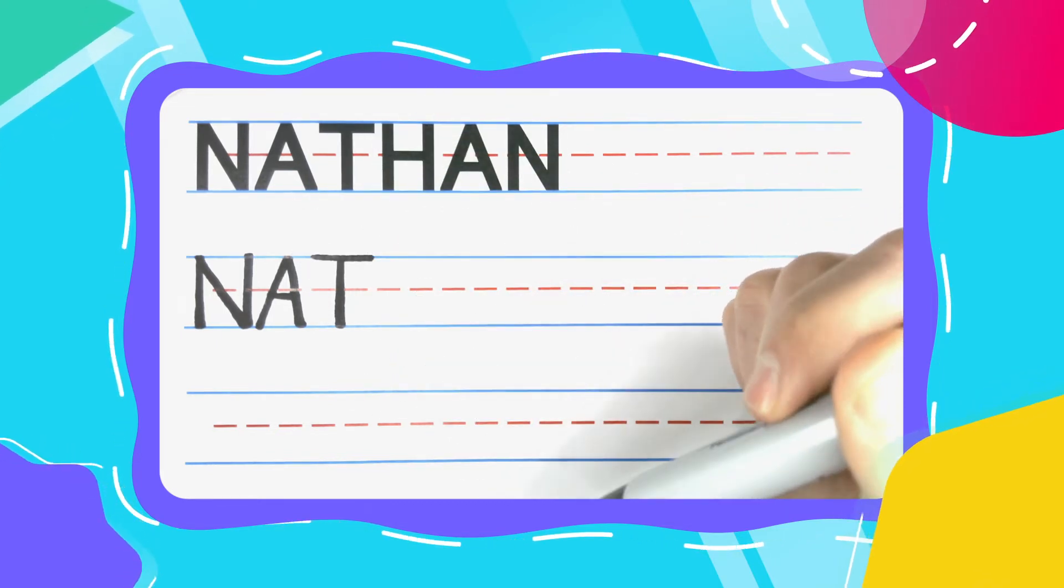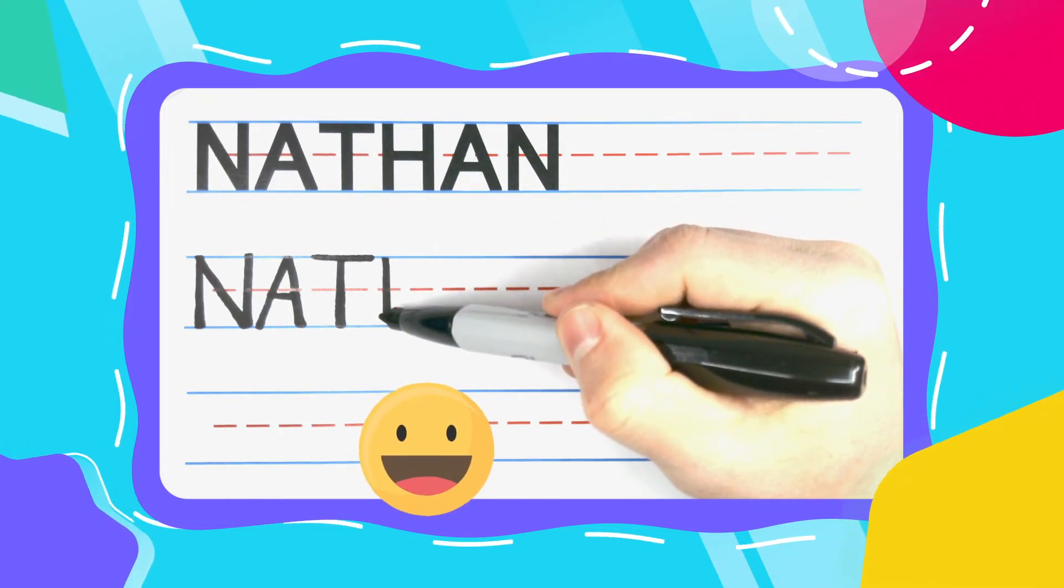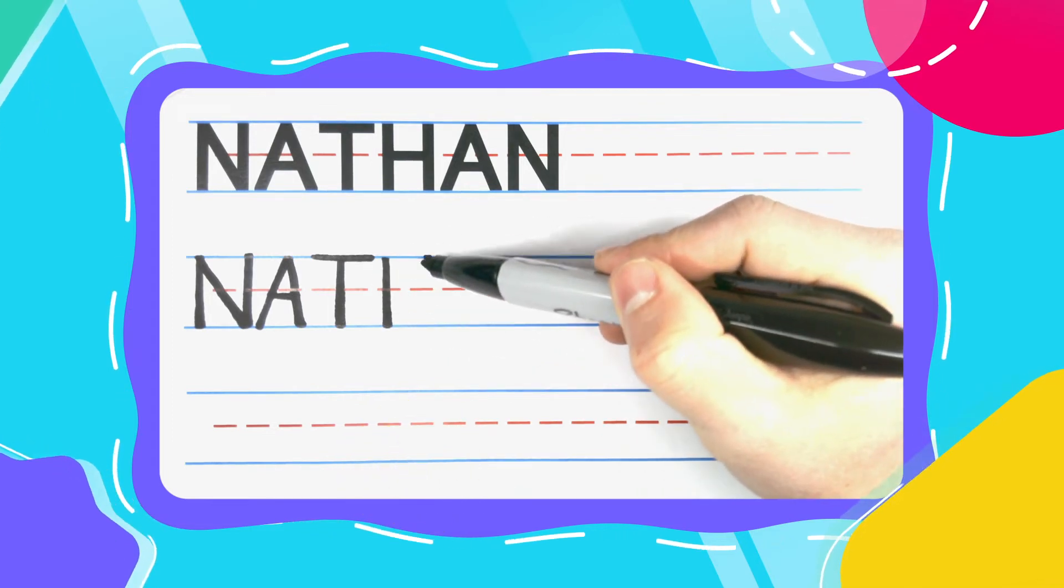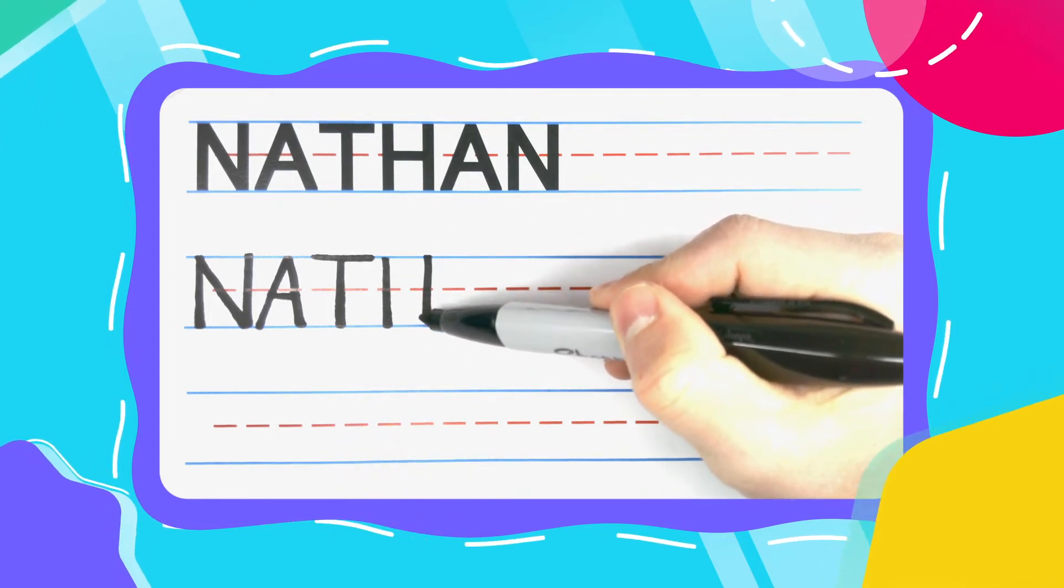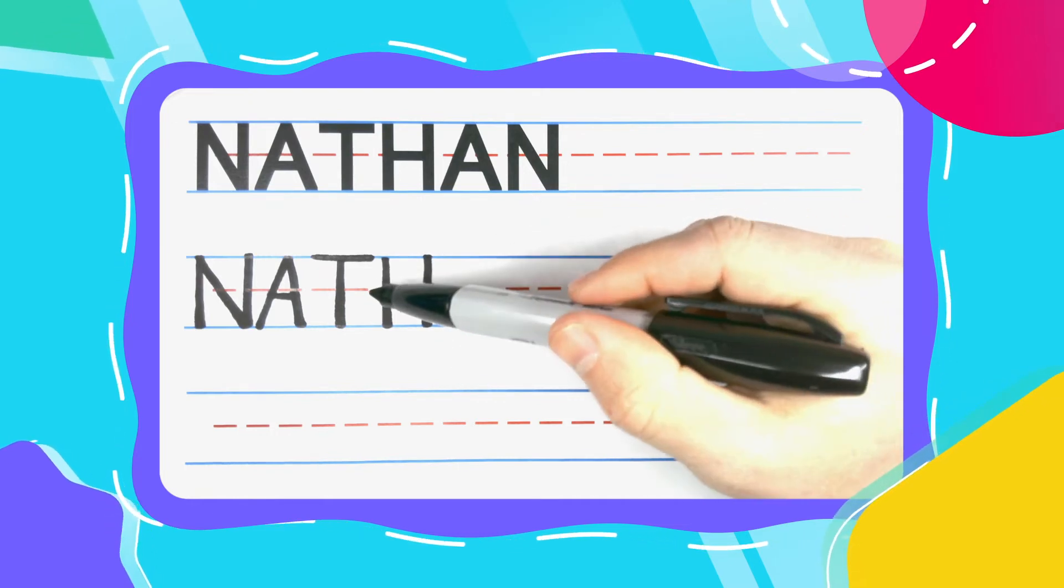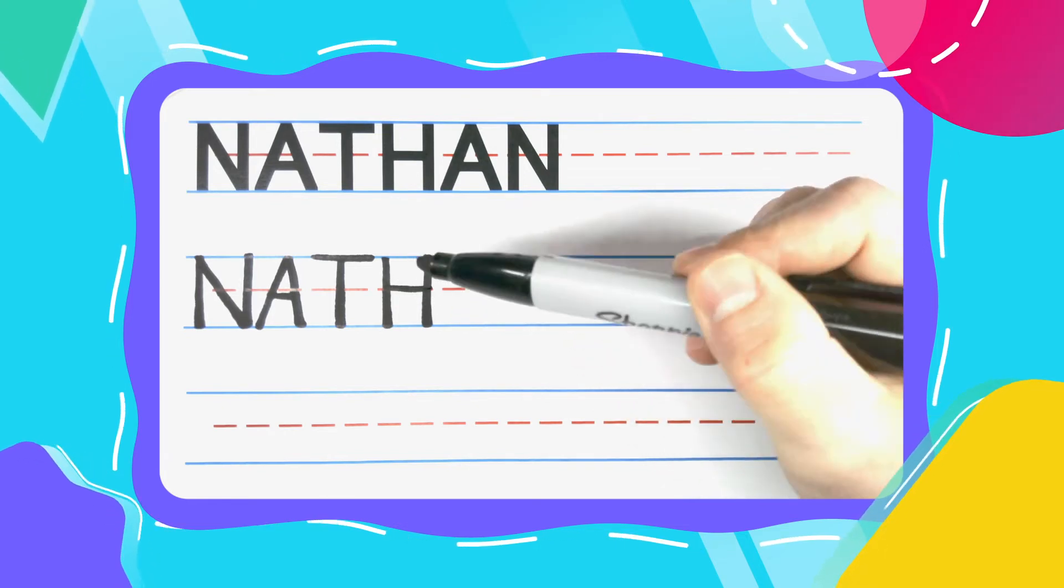The next letter in Nathan is the always happy and never hectic H. Happy H's have two straight up and down lines. Once you have two straight up and down lines, with a little space in between, draw your happy face right in the middle.